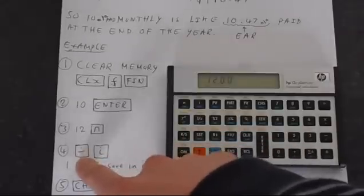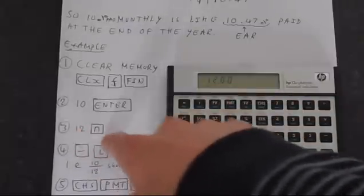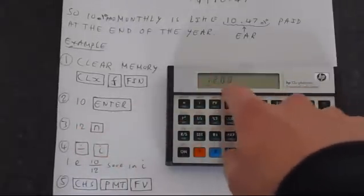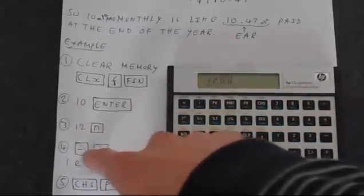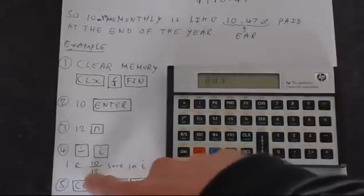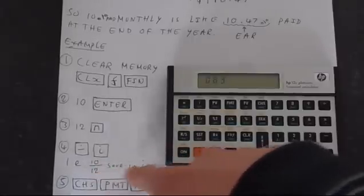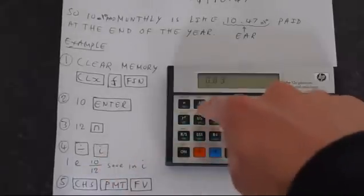We're then going to press divide I. Remember we've got 10 in the memory and 12 in N, and 12 is on the display already. So we're doing divide—this is doing 10 divided by 12. Remember we put 10 in the memory previously. Then we're going to save this into I, so that's why we're pressing I here.